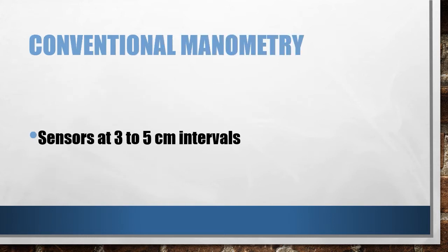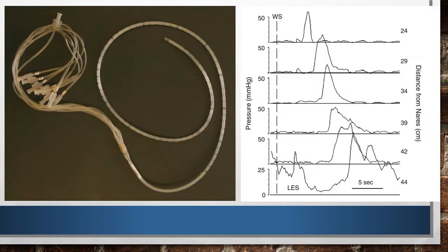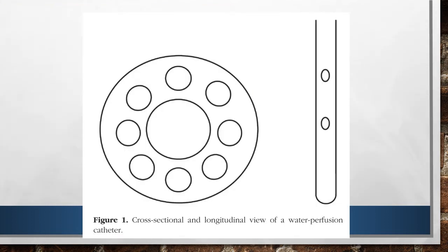Conventional manometry had sensors placed in intervals of 3 to 5 cm. This shows a water-perfused catheter and the manometry waveform recorded using it. This is a cross-section of the old-generation water-perfused catheter. The number of pressure channels are limited, and therefore, only a few pressure waves are recorded.